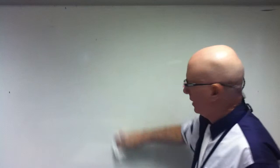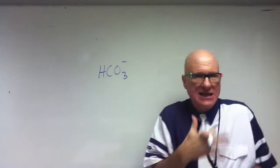It says: write the formula and name of the conjugate base — write the formula and name of the conjugate base of each Brønsted-Lowry acid. So HCO₃⁻, and when it says conjugate, what does that word conjugate mean? Joint — there's a connection between the two.